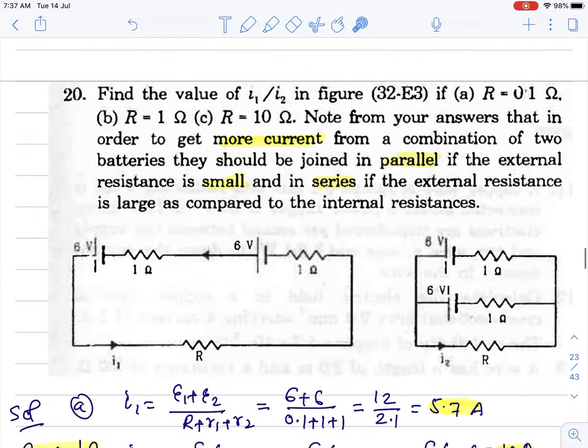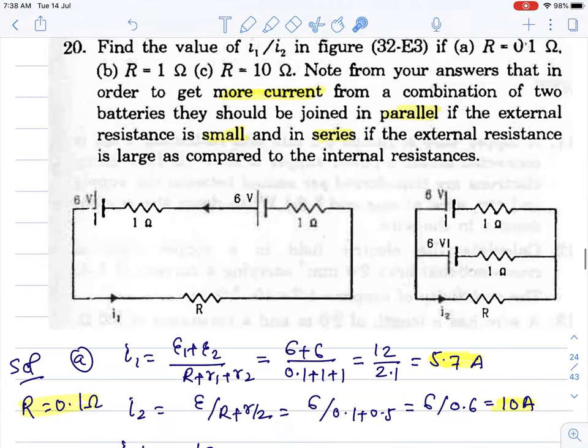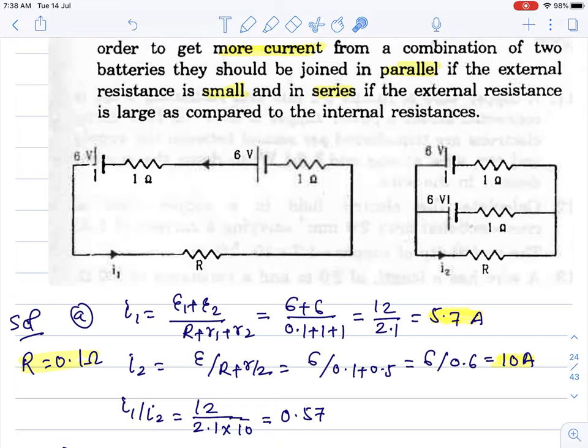Question twenty. Find the values of I1 by I2 in those two circuits if external resistance is 0.1 ohm, then 1, then 10 - increasing gradually. In series, they add up. All resistances in a single loop add up. So 5.7 is coming when external is 0.1 ohm in series. Now let's see parallel.